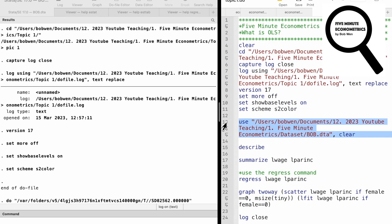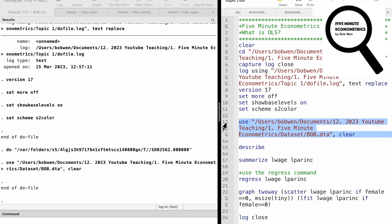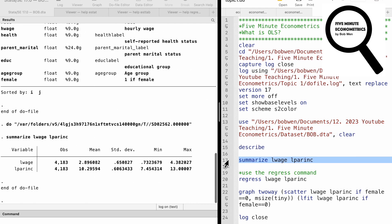In Stata, we use the command regress to perform the OLS regression. We type regress log wage log parent income.